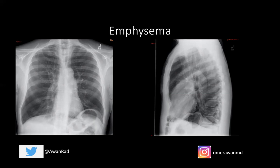You can have centriacinar and panacinar emphysema. Centriacinar affects the respiratory bronchioles but not the alveoli, and is usually seen in smokers, predominantly with upper lobe involvement. Panacinar emphysema affects both the respiratory bronchioles and alveoli, and is characteristically seen in alpha-1 antitrypsin deficiency or in the setting of IV methylphenidate (Ritalin) use. It characteristically involves the lower lobes of the lungs.